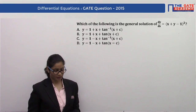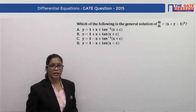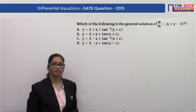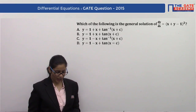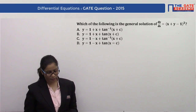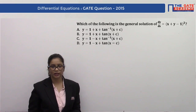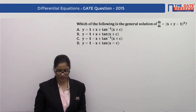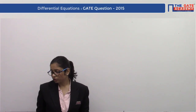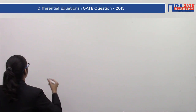The four options are: (A) y = 1 + x + tan⁻¹(x + c), (B) y = 1 + x + tan(x + c), (C) y = 1 − x + tan⁻¹(x + c), and (D) y = 1 − x + tan(x + c). The differential equation given is dy/dx = (x + y − 1)².